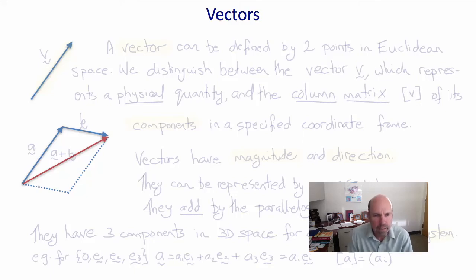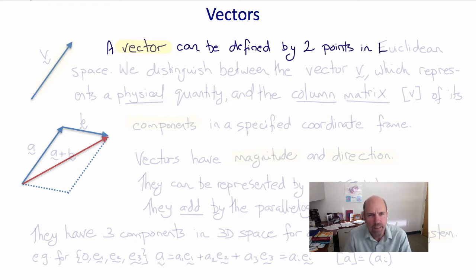Welcome back. Today we'll briefly review vectors and some of their important properties. A vector can be defined by two points in Euclidean space.